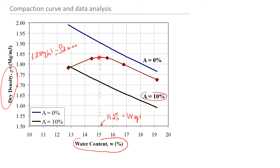This is the theoretical ZAV curve, and this curve will never cross the experimental compaction curve — you can see how they never touch each other.